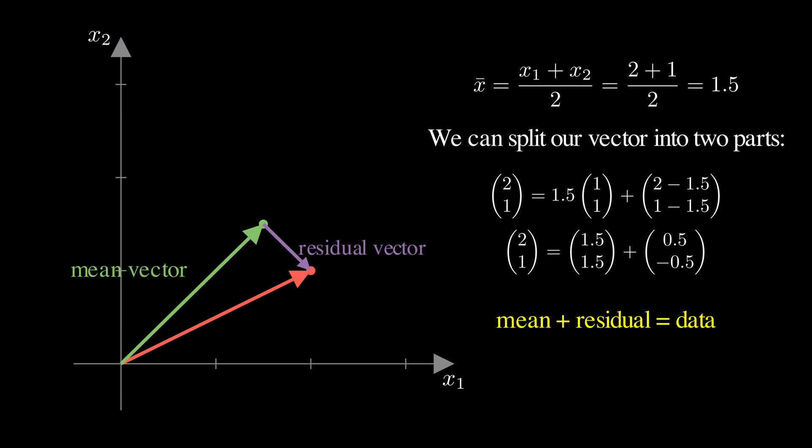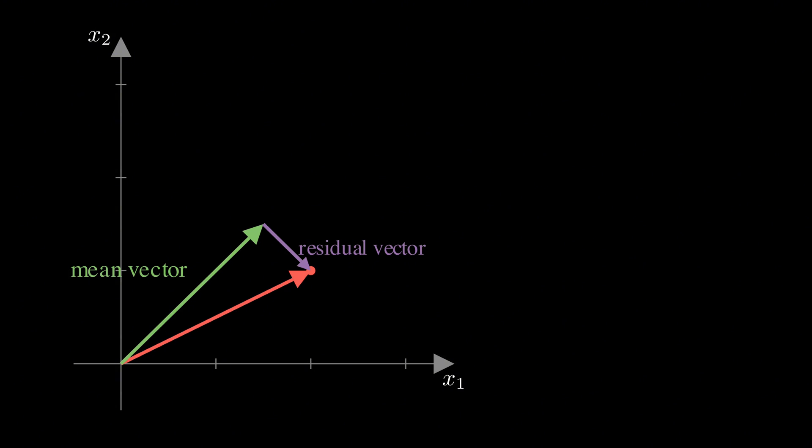Now, even though we started with two degrees of freedom, something special happens to these component vectors. The mean vector can only live on a very specific line, the diagonal where both components are equal, because it's always a multiple of the vector 1, 1.